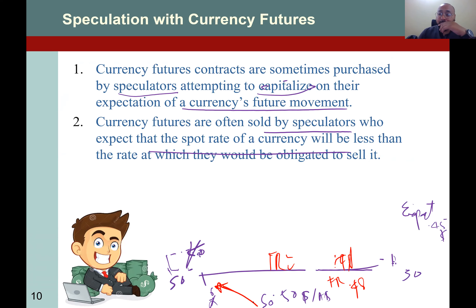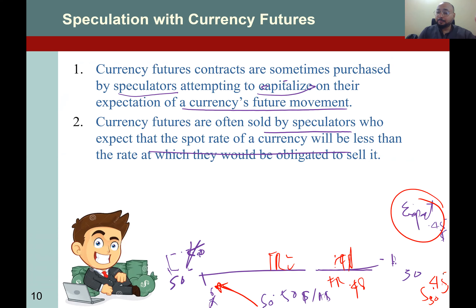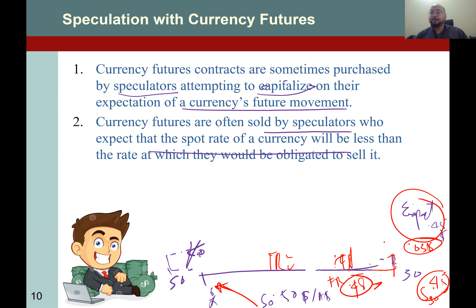At expiration, if your expectations are true and the spot rate after 30 days is indeed 0.45, then you earn a profit. You buy Australian dollar from the market at 0.45 and sell to the other party in your contract at 0.48, earning 0.03 dollar per Australian dollar. If the reference point is 100,000, the profit is lower; if it is 1 million dollars, your profit will be higher — it depends on your reference point.